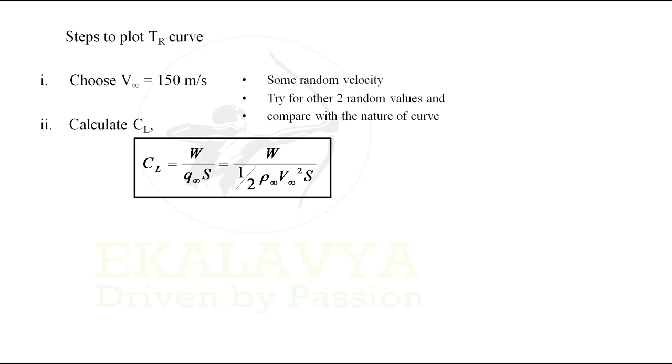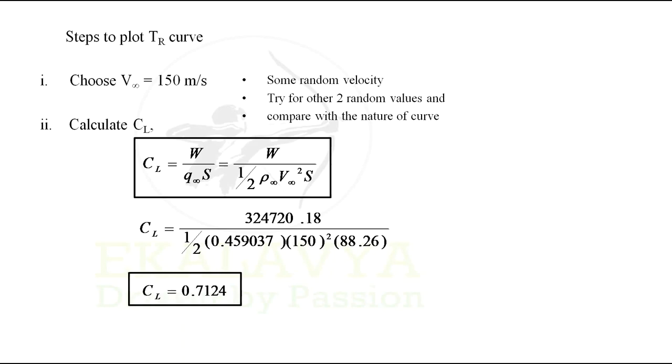By expanding the dynamic pressure, we will be ending up with CL = W / (½ ρ∞ V∞² S). By substituting the values of weight as 324720.18, ρ∞ as 0.459037, velocity chosen as 150 m/s, and wing area as 88.26 m², after substituting all these values and calculating CL, we get CL as 0.7124.